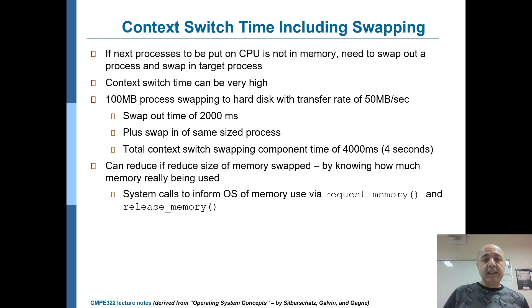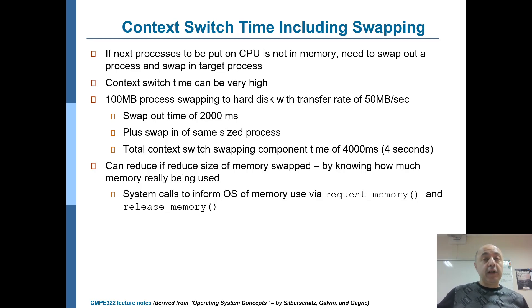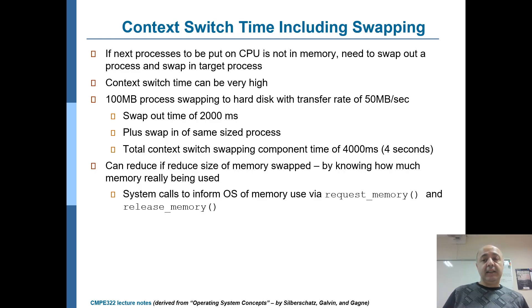The scheduler cannot simply schedule a process that's in swap space, because it will take at least around four seconds for that process to be loaded into memory. So there should be something else — some other process responsible for managing these swap operations — also monitoring the ready queue length to see if it's getting almost empty. It should be a proactive action to decide on swap operations, so that before the ready queue becomes empty, you swap in some processes.